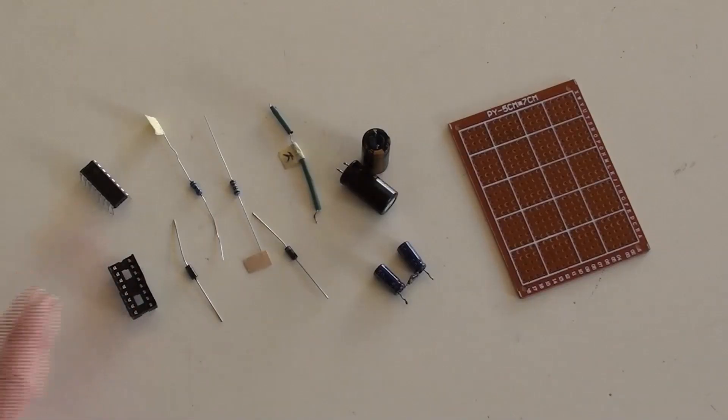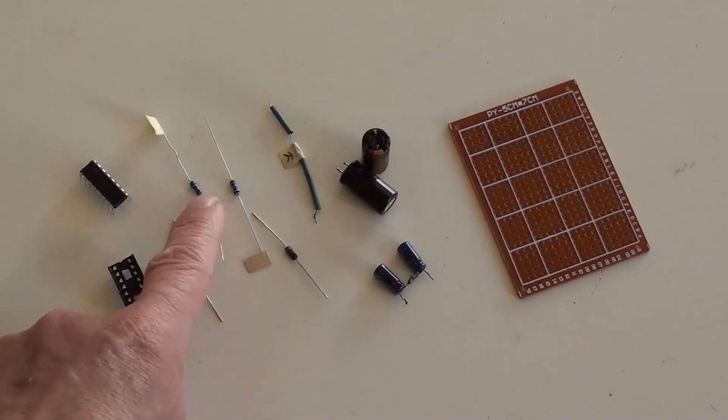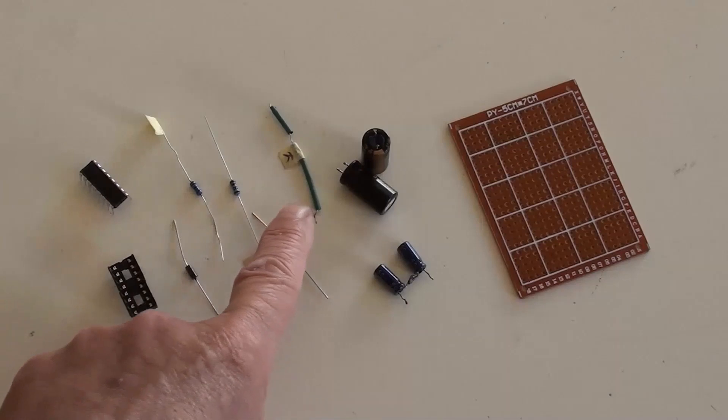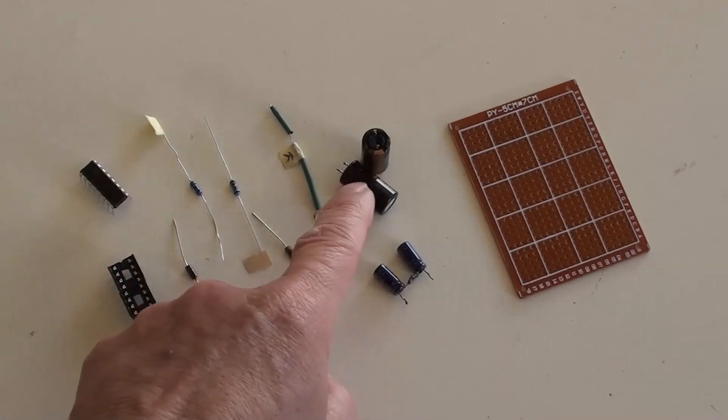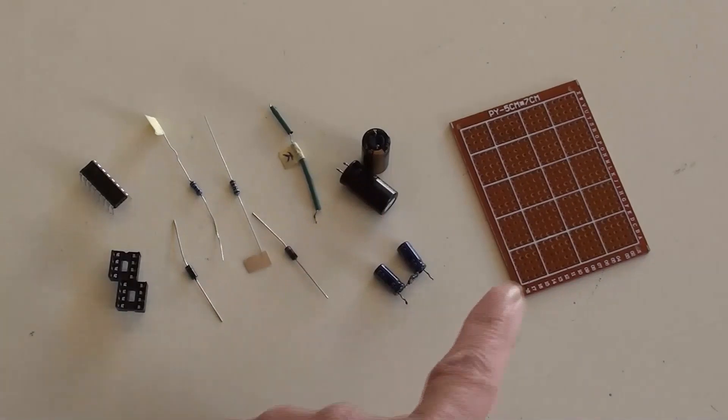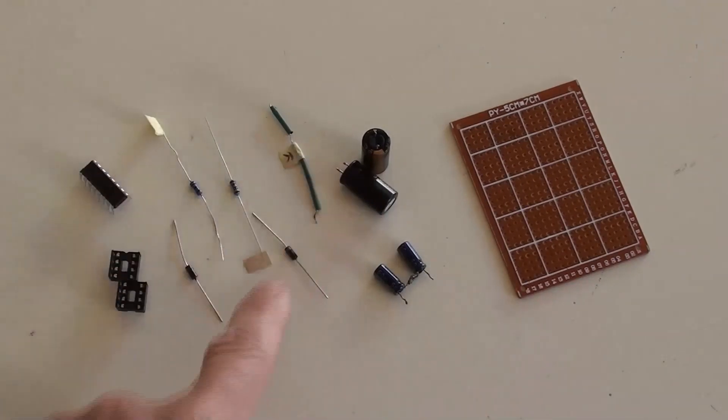This is IC chip of TL494 with 18 pins. Those are diodes, resistors of different values, and various capacitors. This is a mini breadboard and those parts will be soldered on the board.